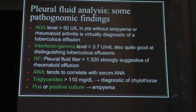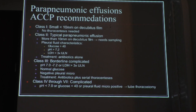Rheumatoid factor is sent when you suspect rheumatoid arthritis-related effusion. ANA can be sent on the fluid analysis. And triglycerides are sent to rule out chylothorax related to trauma or some idiopathic rupture of one of the chyle lymph vessels. If you have pus or a positive culture, obviously you think about an empyema.